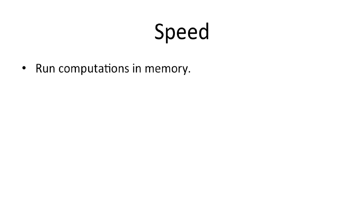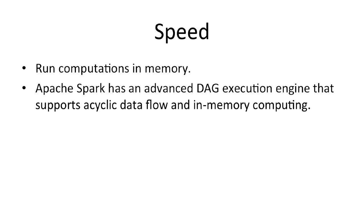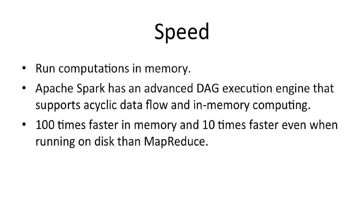Speed is a very critical aspect in processing large datasets as it means the difference between exploring data interactively and waiting minutes or hours. One of the main advantages of Spark regarding speed is its ability to run computations in memory. Apache Spark has an advanced DAG execution engine that supports cyclic data flow and in-memory computing. Spark enables applications in Hadoop clusters to run up to 100 times faster in memory and 10 times faster even when running on disk.